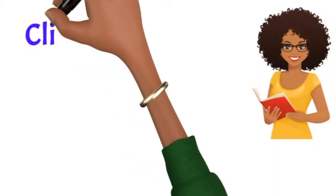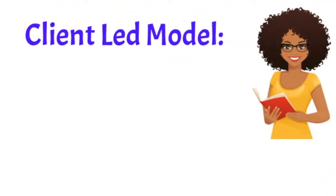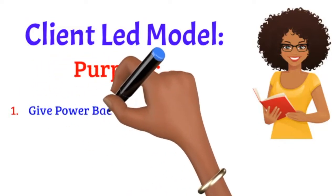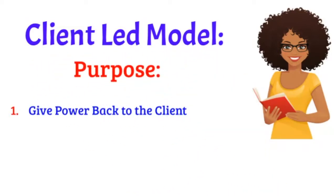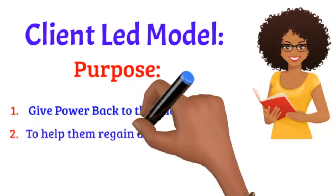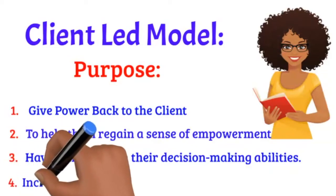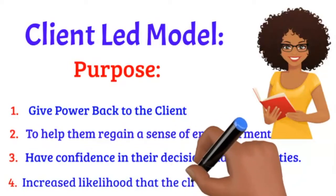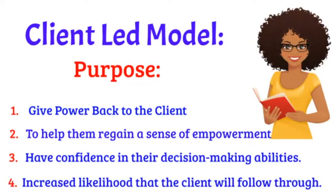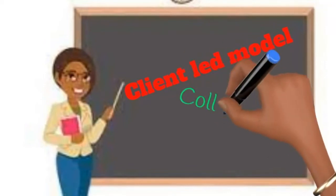Gilliland's Six-Step Model is a client-led model that has a purpose of making sure that the power is given back to the client. We do this by helping them regain a sense of empowerment and to have confidence in their decision-making abilities. An additional benefit of the client-led model is the increased likelihood that the client will follow through with a plan if they have created it for themselves, rather than one that was created for them.